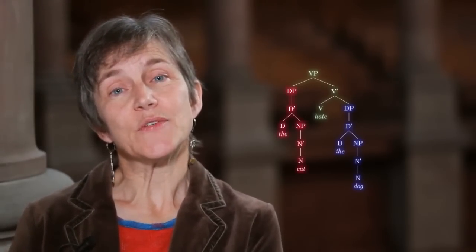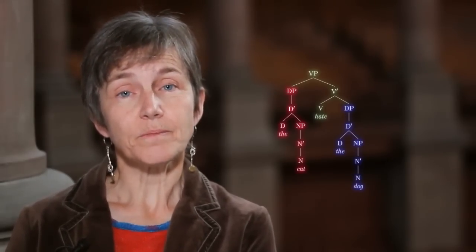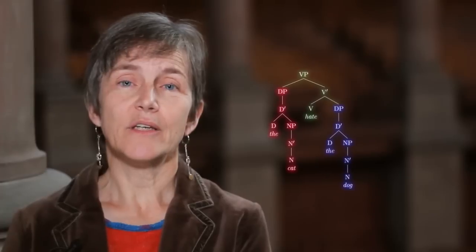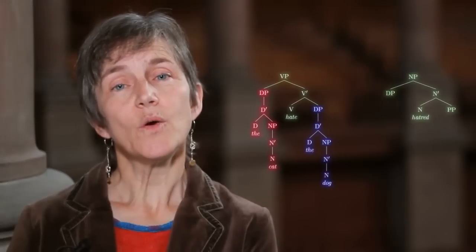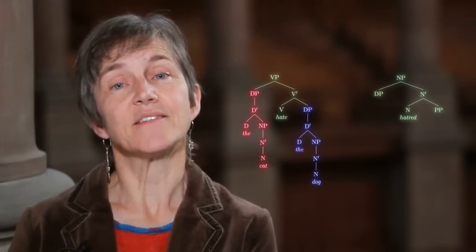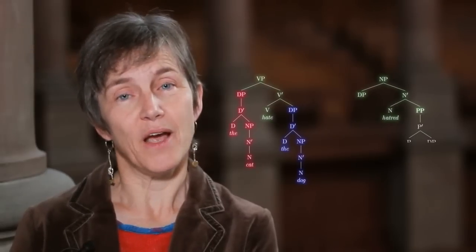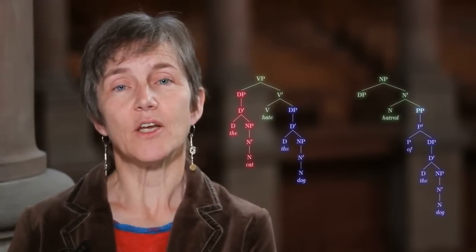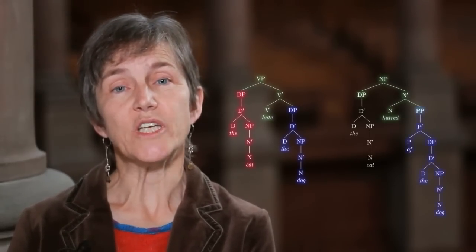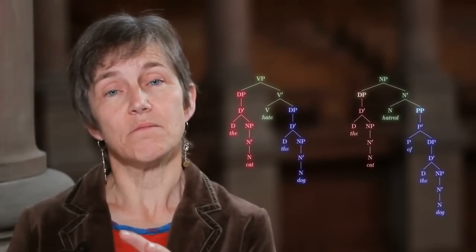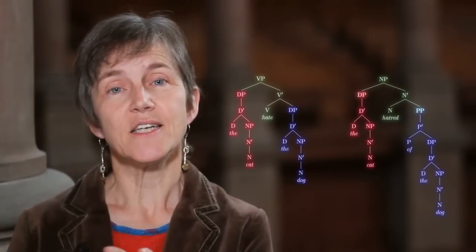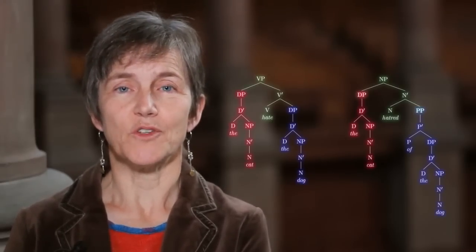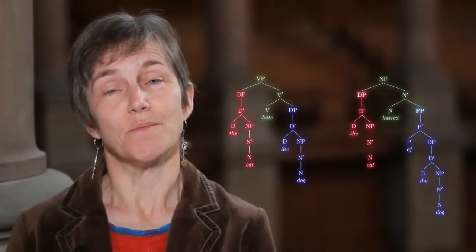Since we see exactly those same arguments in the case of the nominal, we'd want to say that the noun hatred also has an elementary tree showing the phrases it selects — it selects the PP headed by of as its complement, and also selects a specifier, which expresses the experiencer: the DP corresponding to the person or entity experiencing the emotion.